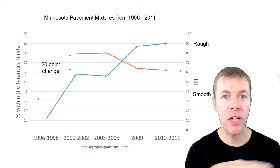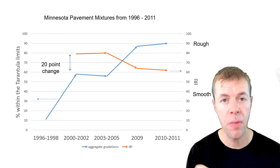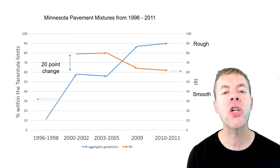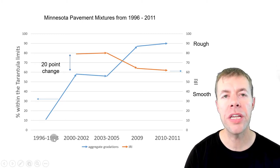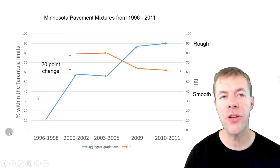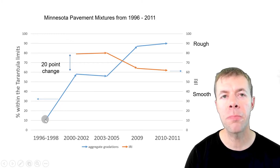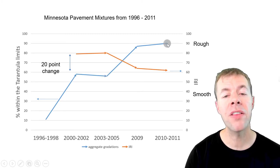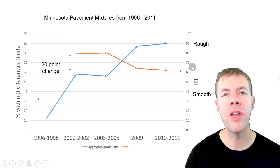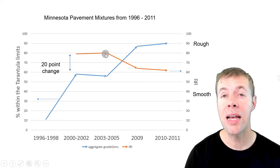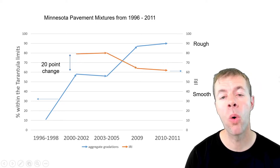Minnesota, when they went out and measured how smooth their pavements were, found that as their mixtures got more and more inside the tarantula curve, they got smoother and smoother. On this graph, the x-axis shows the years, and the y-axis shows the percentage of mixtures within the tarantula curve. The blue line shows there weren't very many in at first, then they got more in, and finally about 90% ended up inside the tarantula curve. When mixtures were outside the tarantula curve, pavements were rough; as they got more and more in, they became more and more smooth.